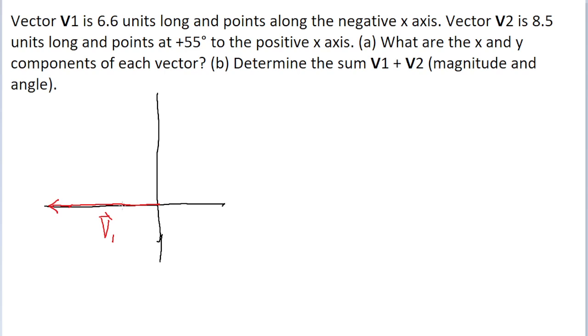The second vector has 8.5 units and points at a positive 55 degree angle to the positive x-axis. It's going to look something like this, coming up at a 55 degree angle from the horizontal. This is vector v sub 2 at 55 degrees.